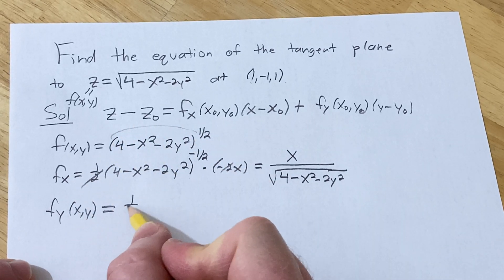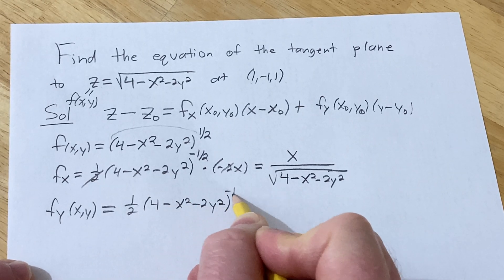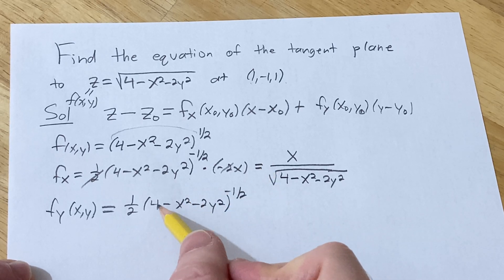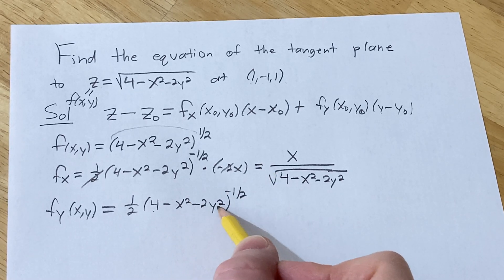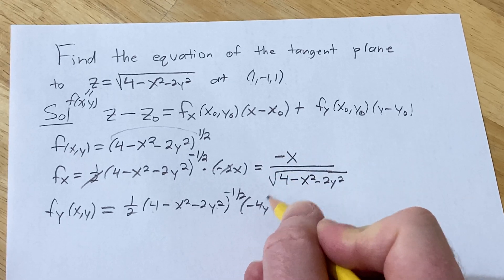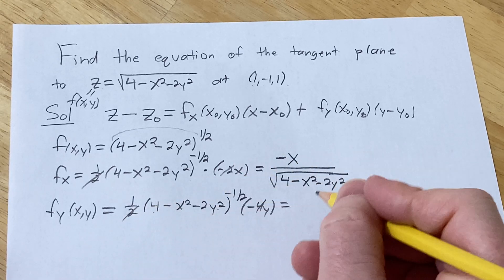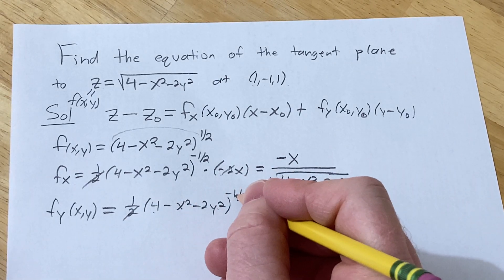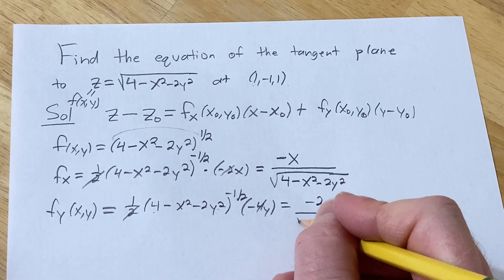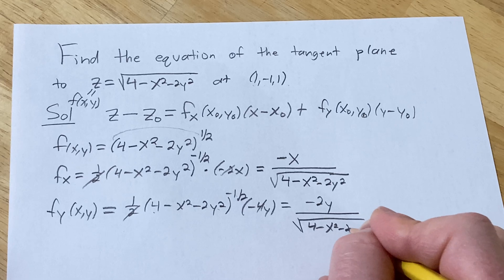So one half, (4 - x² - 2y²). Same thing, except now we're differentiating with respect to y. So this will be 0 and this will be 0, so this will be negative 4y. I lost my negative there. There's a negative there, be careful. These cancel, so this will be -2y over, bring it downstairs, it becomes a one half power, which turns into a square root. So it will be 4 - x² - 2y².